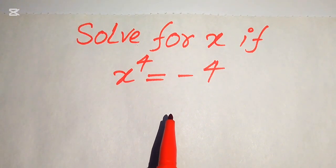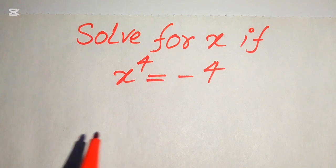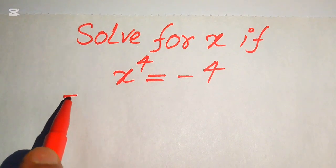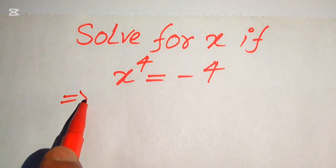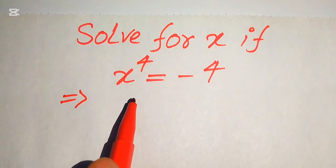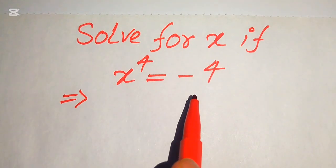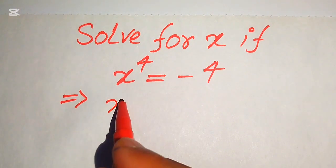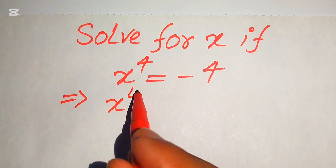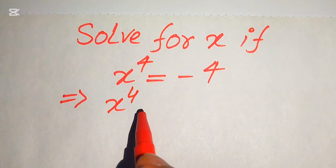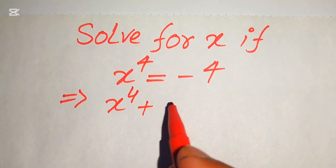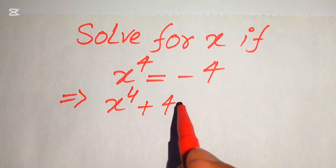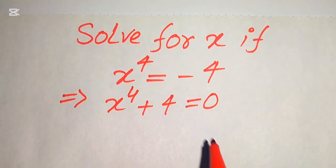The very first step is to focus on the right hand side and move the term from the right hand side to the left hand side. This is minus 4; when we move it to the left hand side it becomes plus 4, and we get x to the power of 4 plus 4 equals 0.